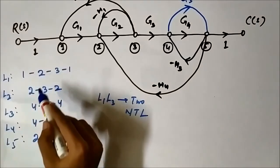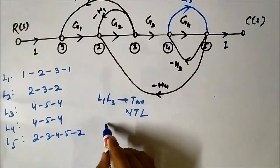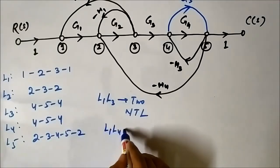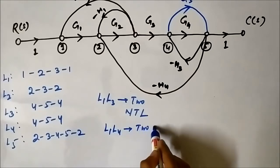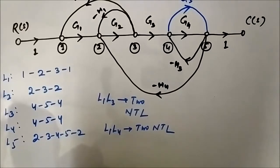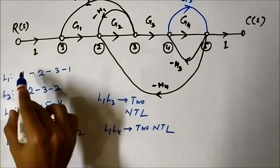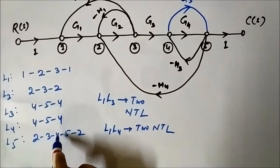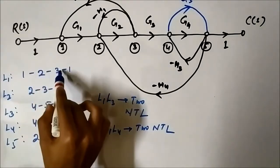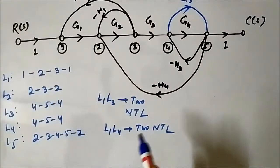L1 (1,2,3,1) and L4 (4,5,4) also have no common node, so L1 and L4 are two non-touching loops. Next, comparing L1 (1,2,3,1) with L5 (2,3,4,5,2): nodes 2 and 3 are common. So L1 and L5 are touching.